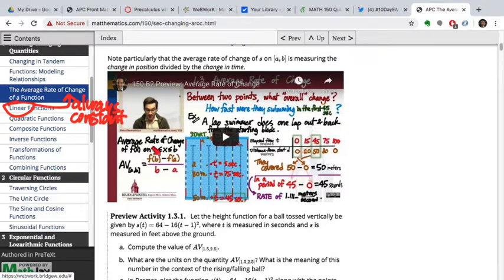Average rate of change is something we can compute for any function relationship, whether we understand it as a data table, a graph, or a formula. You'll practice all three types today. In all cases, it has the same meaning and interpretation. These three activities will get you used to thinking about how to compute average rate of change and what it tells us.